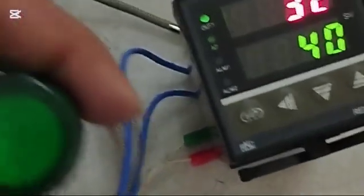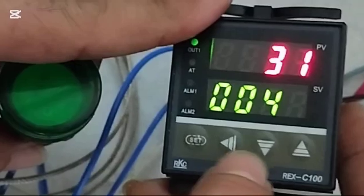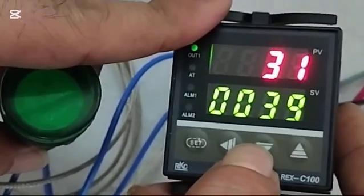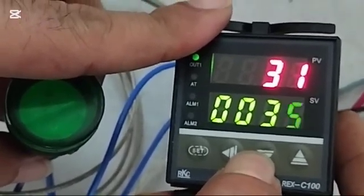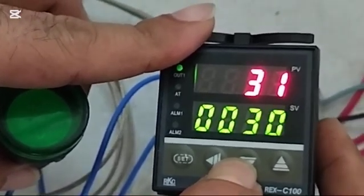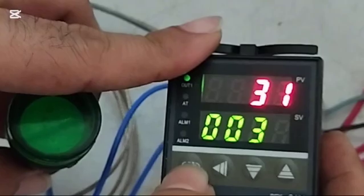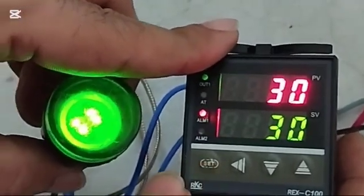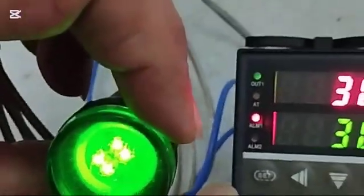Now I will show alarm controlling. Set temperature need to decrease, supposed 30. Alarm is on.